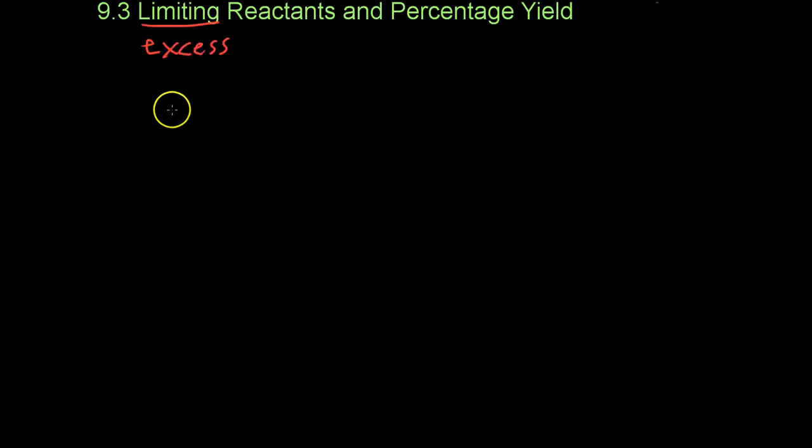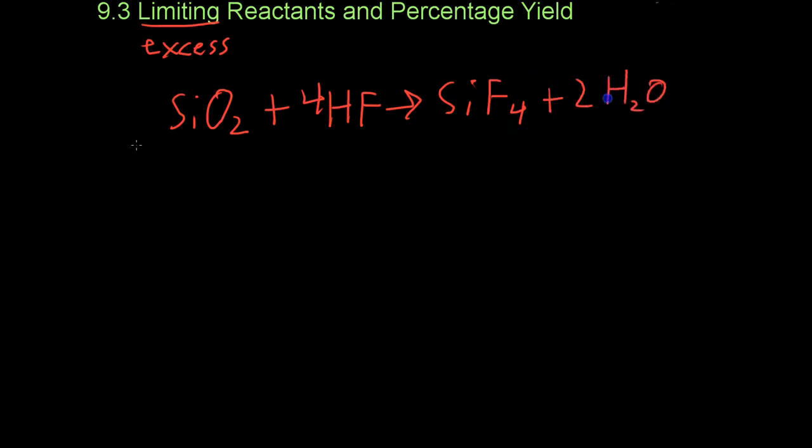Let's take the example of quartz, which is silicon dioxide, reacting with hydrofluoric acid, which has the formula HF. They react to form silicon tetrafluoride and water. Let's say we're given 6 moles of hydrofluoric acid and 4.5 moles of silicon dioxide.